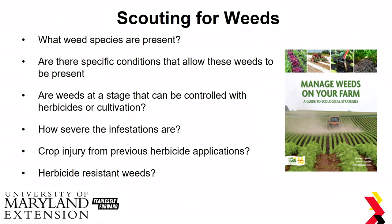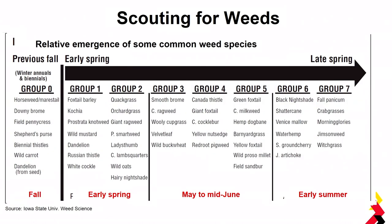Are there any herbicide-resistant weeds in your field? Here in Maryland we have a lot of problems with Palmer Amaranth, resistant smooth pigweed, and resistant common ragweed. When scouting, remember that not all weeds are going to emerge at once. This chart shows what types of weeds we have and when they're likely to emerge. If you know dandelions are a problem weed, you can expect that to emerge in early spring.